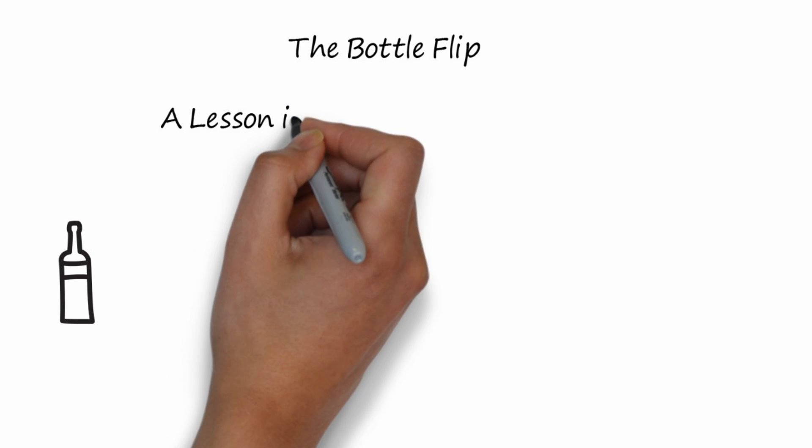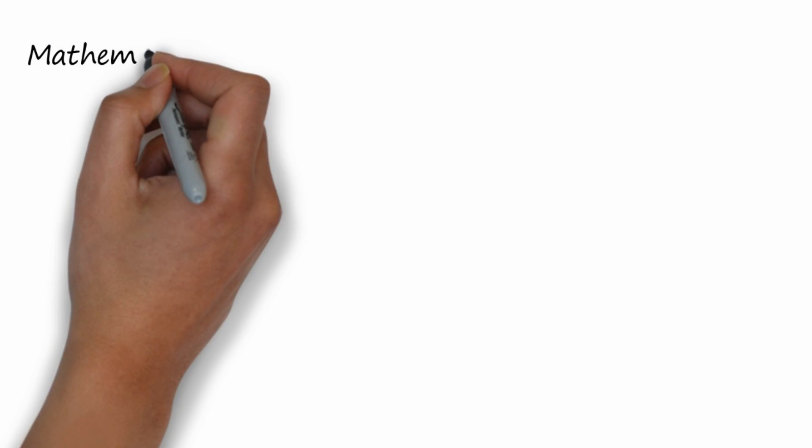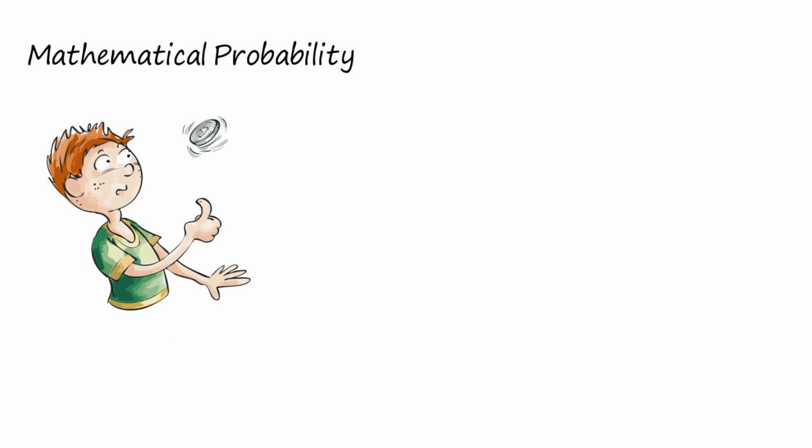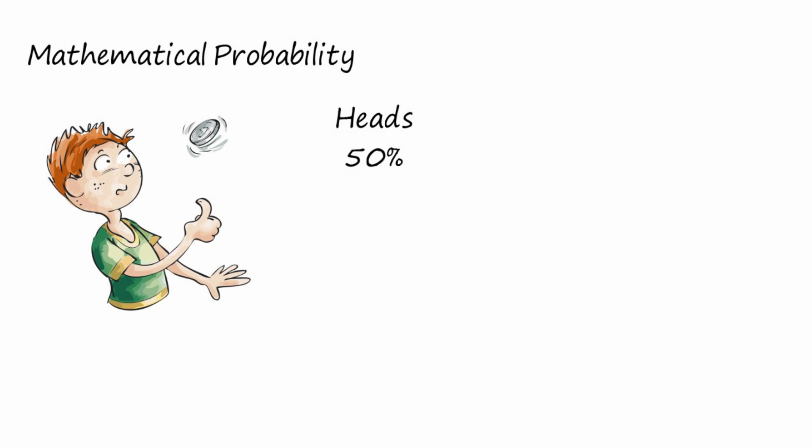The bottle flip, or a lesson in experimental probability. Let's first talk about mathematical probability. Mathematical probability means we can calculate ahead of time the probability. You're all familiar with a coin toss. There's one head and one tail on a coin, and because of that we can calculate the probability of getting heads or tails before we even throw the coin.